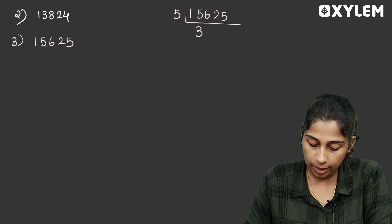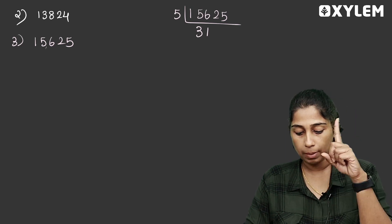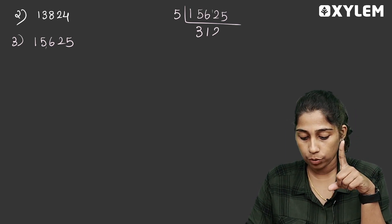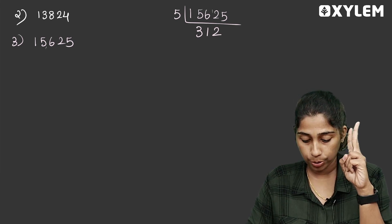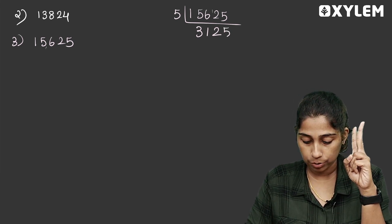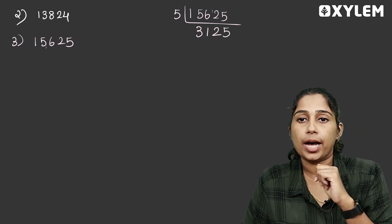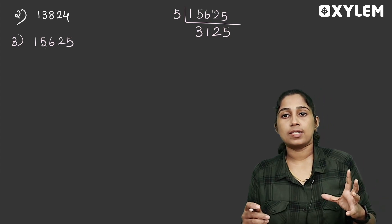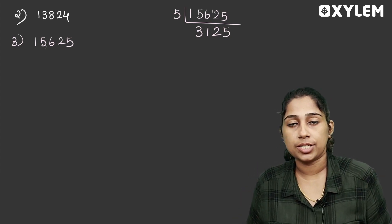3 times 5 is 15. 6 times 5 is 5. Balance 1, 12. 2 times 5 is 10. Balance 2, 25. 5 times 2 is 25. Now we have to ask the numbers. Even numbers — we start with prime factorization.